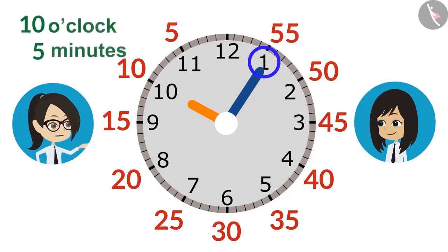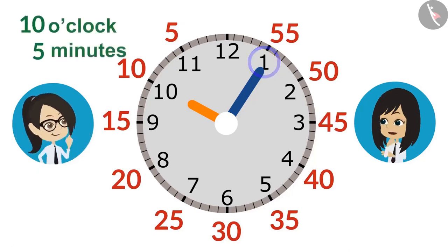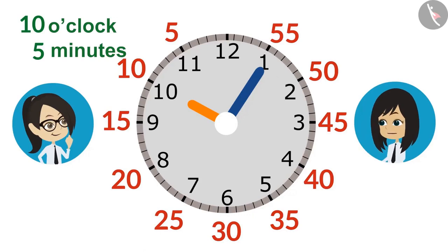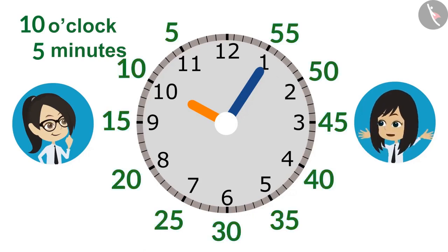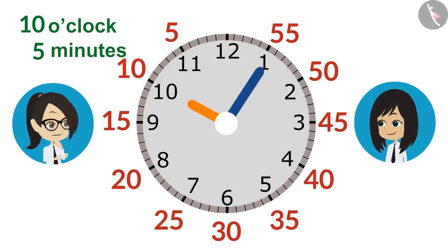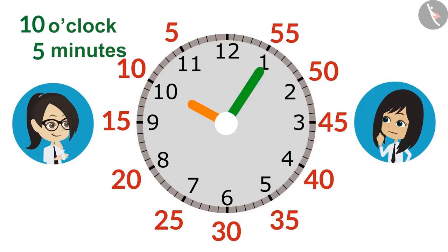This means we have to leave the hotel at 5 minutes past 10 o'clock. No, Vandana, this is incorrect. How is it incorrect? 5 minutes past 10 o'clock means it is after 10 o'clock, whereas we have to leave 55 minutes before 10 o'clock. But where was the mistake made? Look, you moved the minute hand behind but you forgot to move the hour hand.